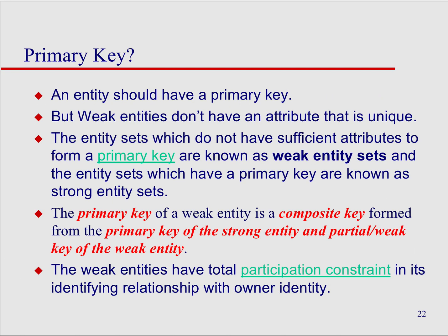What about primary keys with a weak entity and a strong entity? We understand how primary keys work for strong entities, but a weak entity is a little different. The primary key for the weak entity is going to be a composite — it combines the primary key of the strong entity with a partial key of the weak entity. We call this the partial key.